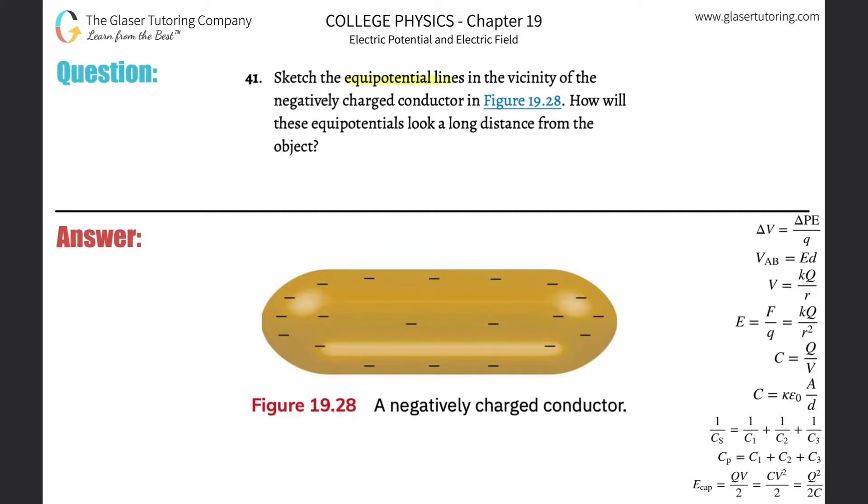Number 41, sketch the equipotential lines in the vicinity of the negatively charged conductor. How will these equipotentials look at a long distance from the object?